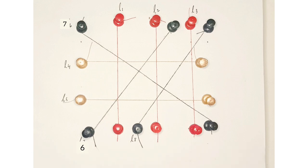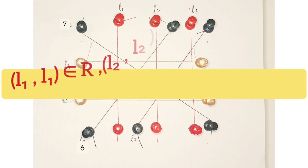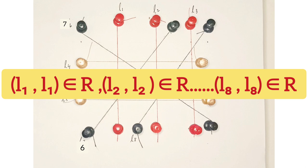We see that every line is parallel to itself: L1 is parallel to L1, L2 is parallel to L2, up to L8 is parallel to L8. So (L1, L1) belongs to R, (L2, L2) belongs to R, up to (L8, L8) belongs to R. Hence the given relation R is reflexive.